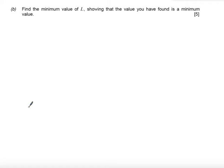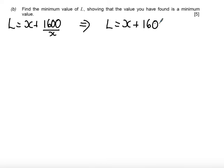Part b says find the minimum value of l, showing that the value that you have found is a minimum value. So I know that l is x plus 1600 over x. I'm looking to find the minimum of this function, so I'm going to need to differentiate. Before I differentiate that, I'm going to need to rewrite the reciprocal in index form. So I'm going to rewrite this as l equals x plus 1600x to the minus 1.